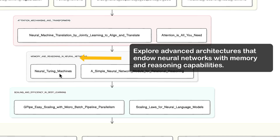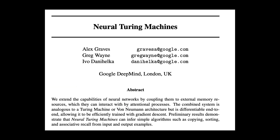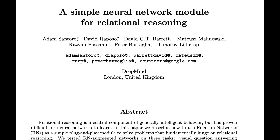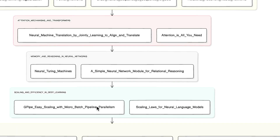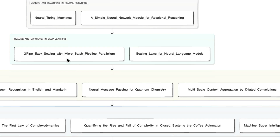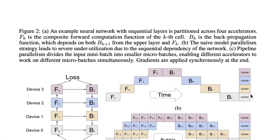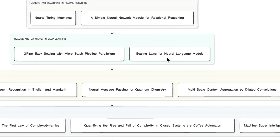Then Memory and Reasoning in Neural Networks explores architectures that endow neural networks with memory and reasoning capabilities. This includes Neural Turing Machines — understanding how to augment neural networks with external memory — and 'A Simple Neural Network Module for Relational Reasoning.' Then Scaling and Efficiency in Deep Learning covers GPipe: Easy Scaling with Micro-Batch Pipeline Parallelism for training very large models, and 'Scaling Laws for Neural Language Models' — discovering empirical laws governing language model performance as they scale.